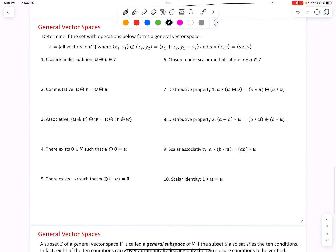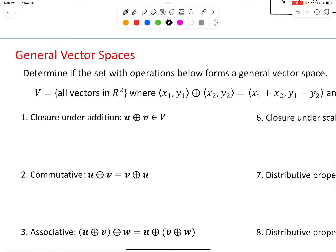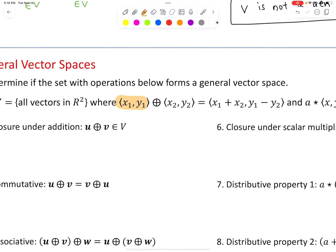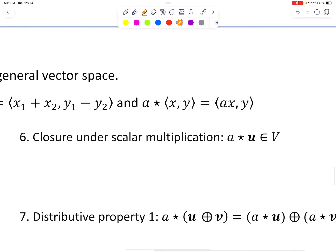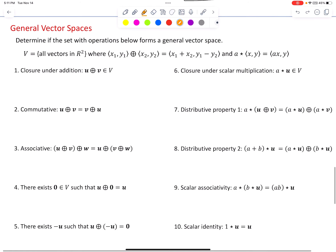Let's explore object addition and scalar object multiplication that are not in the normal sense, going back to a set of vectors in R2. So V will be all vectors in R2. However, we define vector addition in the following way: if you take vector one (x1, y1) and add vector two (x2, y2), we get a new vector where the first component is x1 plus x2 as expected, but the second component is the difference y1 minus y2. Furthermore, scalar multiplication is defined atypically: scalar A times vector (x, y) means the scalar only distributes to the first component, not the second.